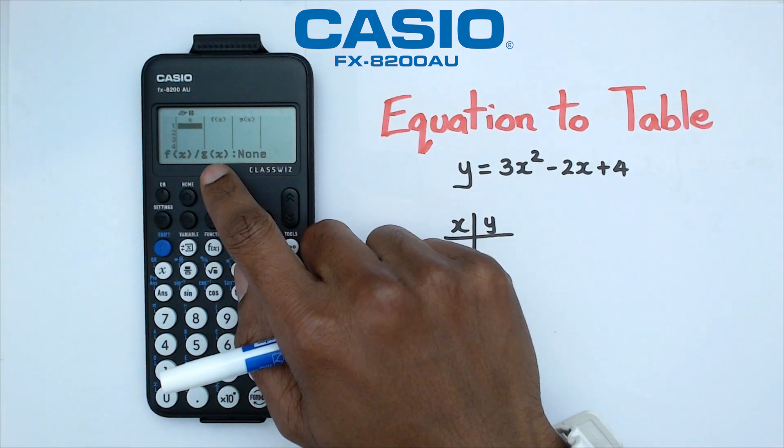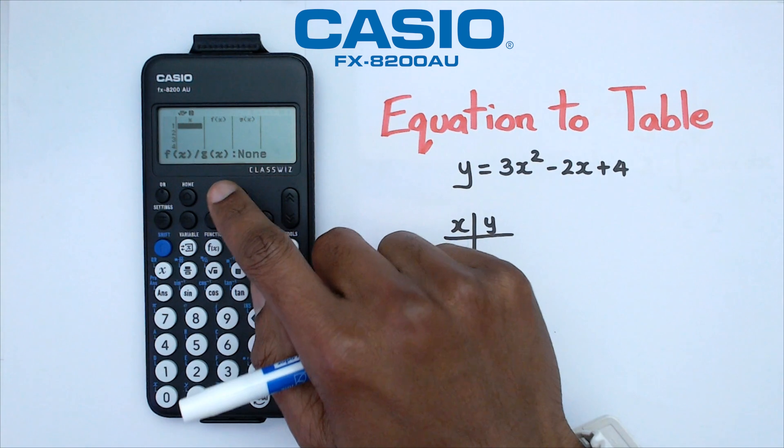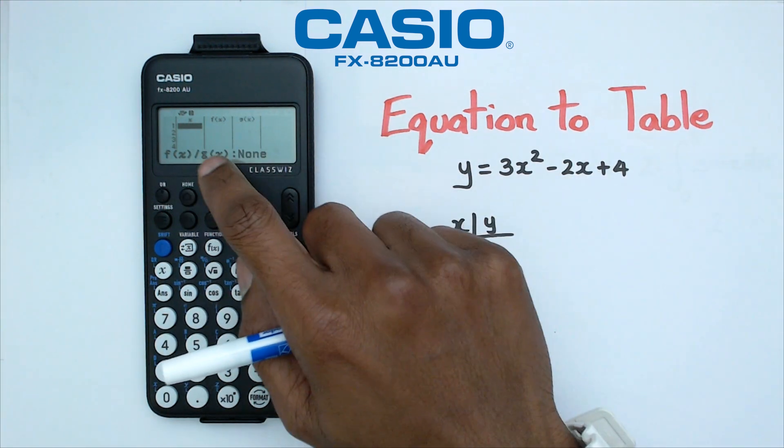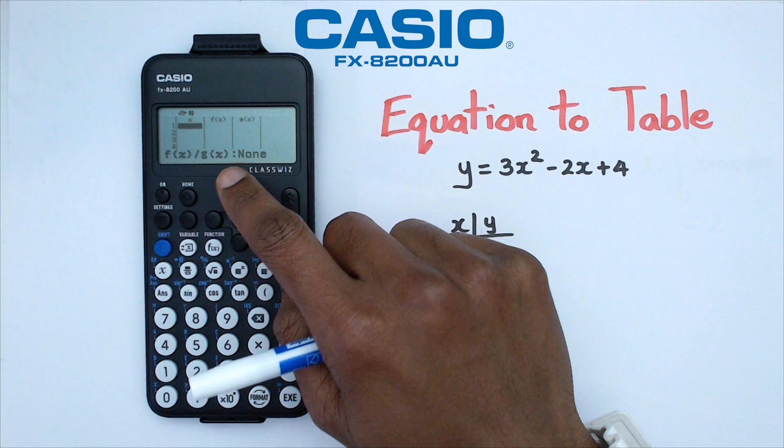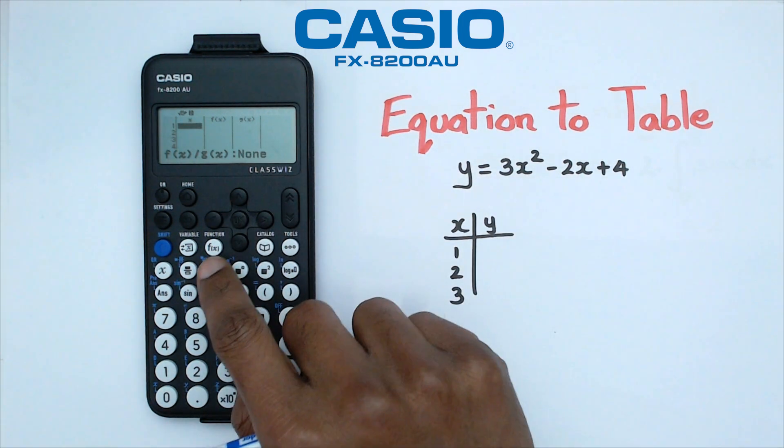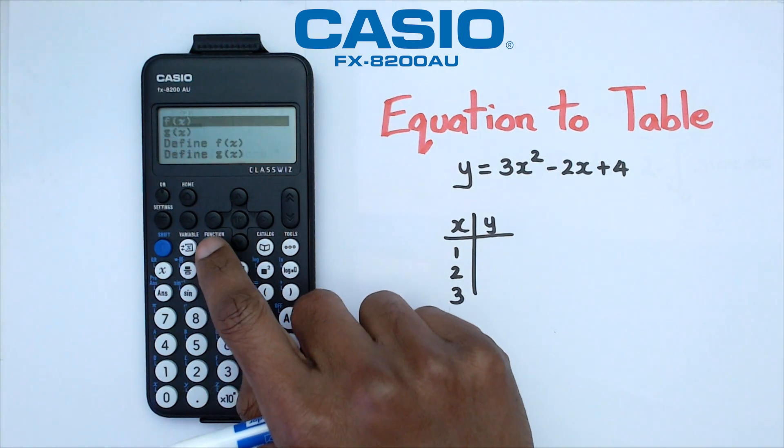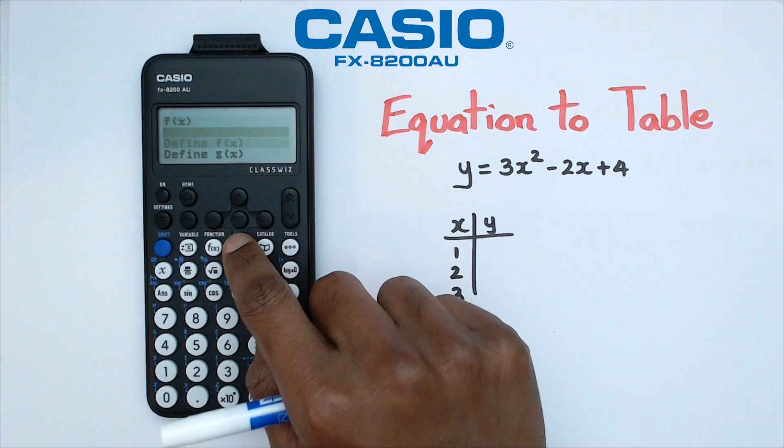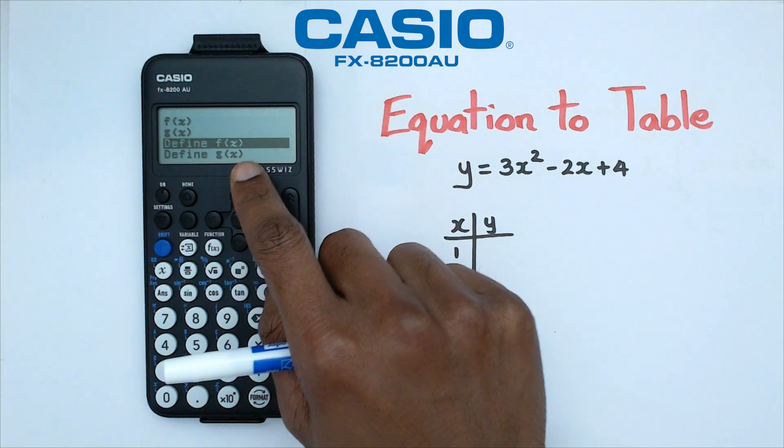And right now, it says f(x) and g(x) is none. This is basically saying that there is actually no functions that are stored for f(x) or g(x). So what we're going to do is we're going to write f(x) as this particular function here. So to do that, we're going to click on function, and what you'll notice is this is what f(x) is, but we actually need to click on define f(x).